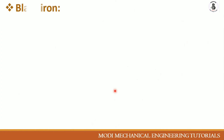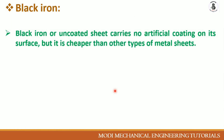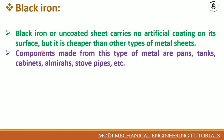The first material is black iron. Black iron, or uncoated sheet, carries no artificial coating on its surface, but it is cheaper than other types of sheet metals — that is one of its advantages. Components made from black iron include paint tanks, cabinets, almirahs, stove pipes, and many more.